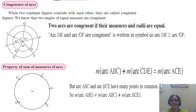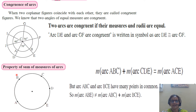But measure of arc ABC plus measure of arc BCD — they have some points in common. So, measure of arc ABE is not equal to arc ABC plus arc BCE, because some points are common. So this addition is not valid. But measure of arc ABC plus measure of arc CDE is equal to measure of arc ACE — that is called arc addition.